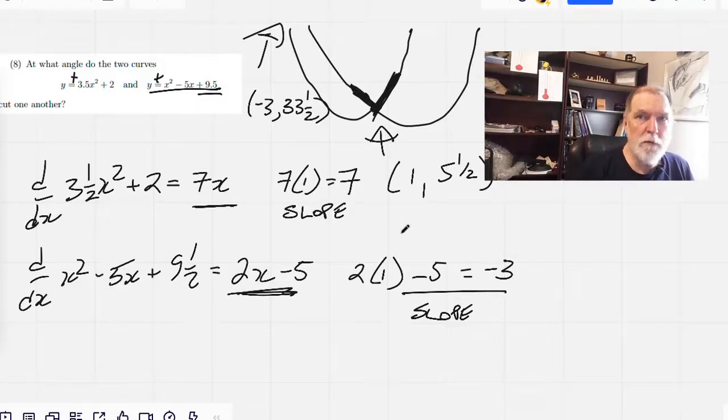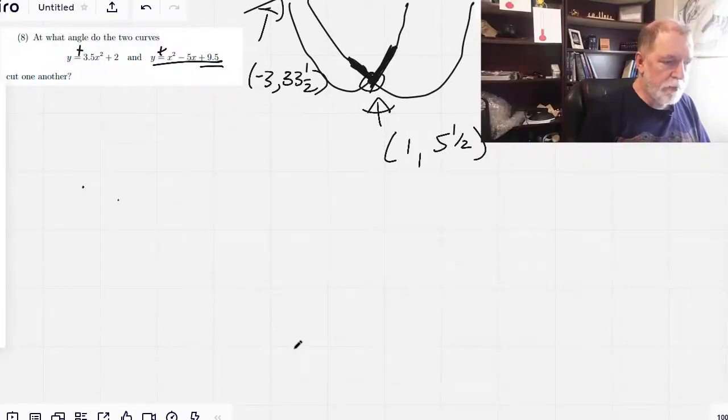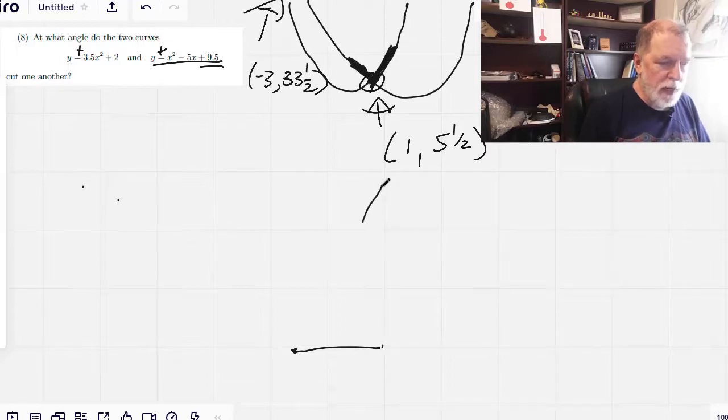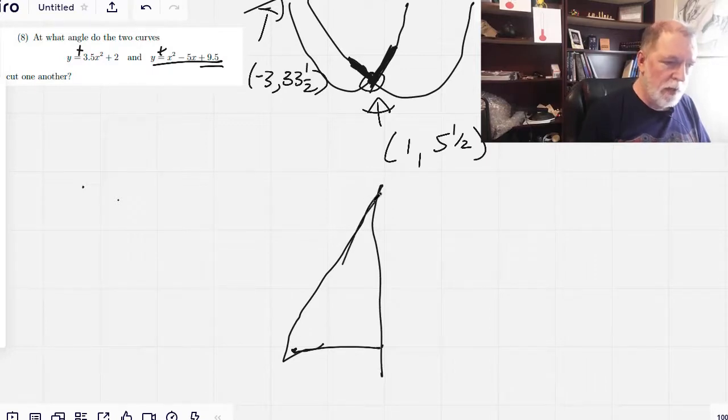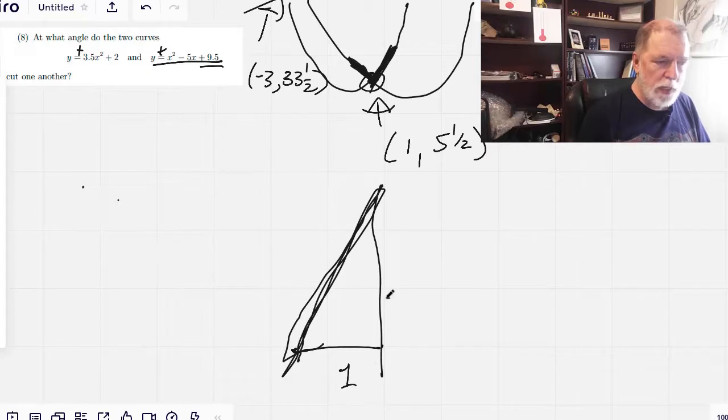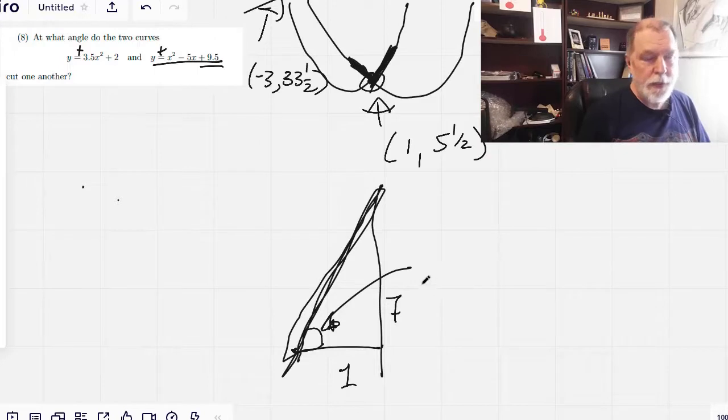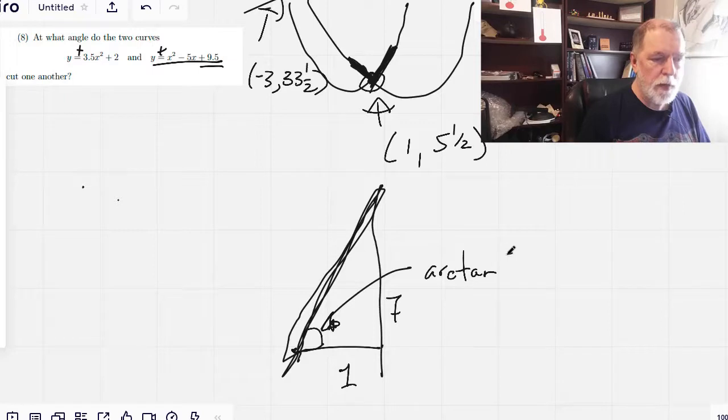So let's now translate that into a question of angle. This point of intersection is down here. We go over 1 and we scoot up 7. So here's our line. That's 1. That's 7. So this angle here is the arctangent of 7.